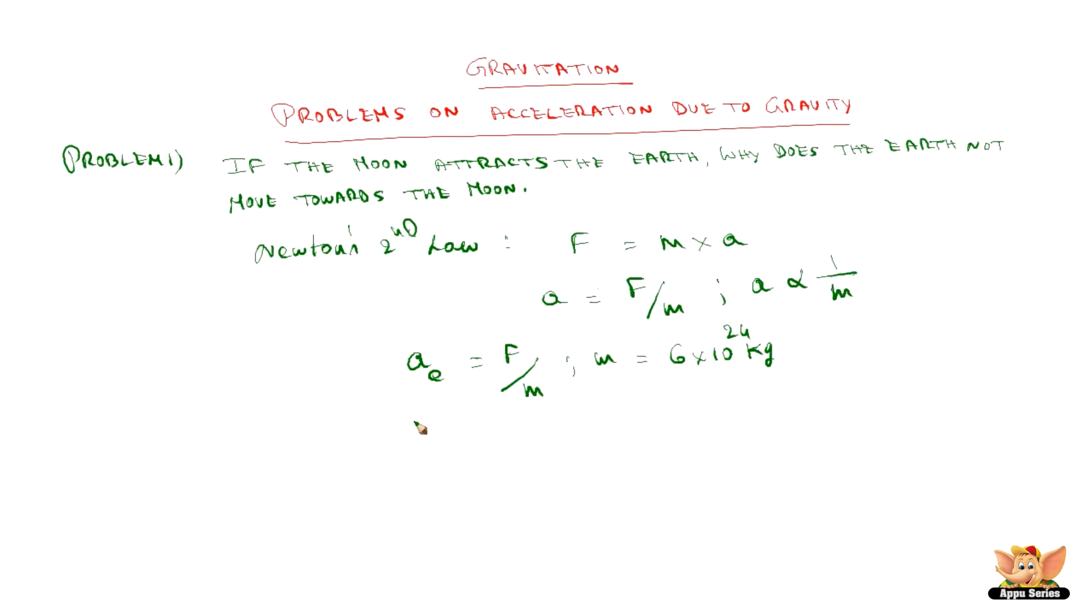Whereas in the case of moon, the mass is 7.4 x 10 to the power 22 kg. So there is a difference of 100 times. This 100 times difference will reflect a difference of 100 times with respect to acceleration.